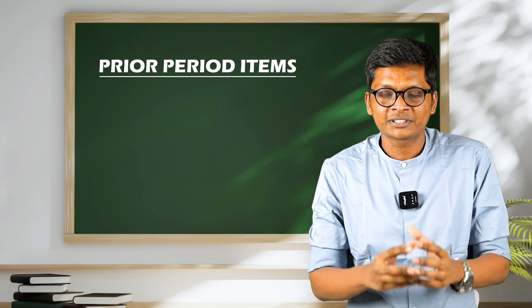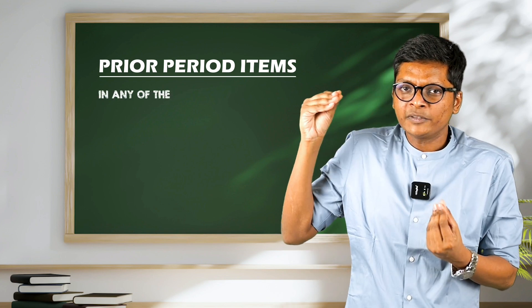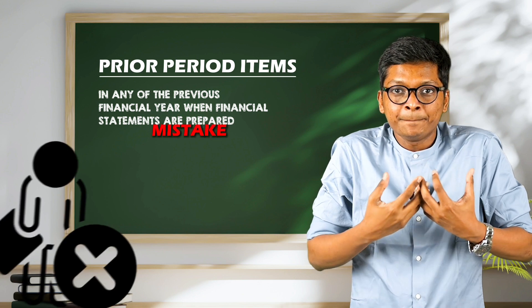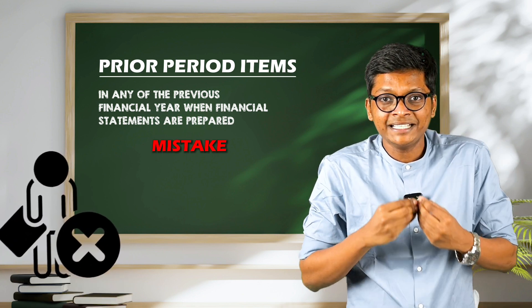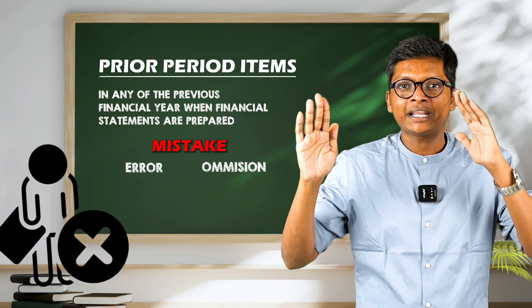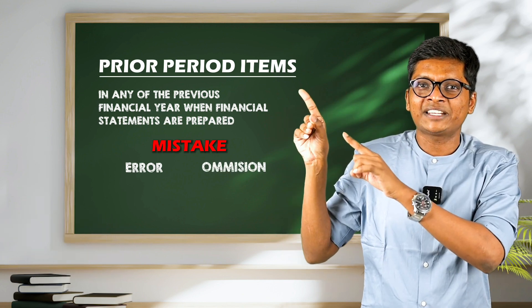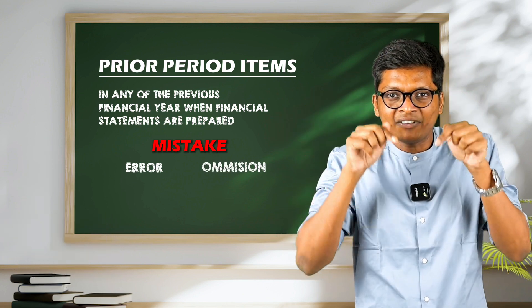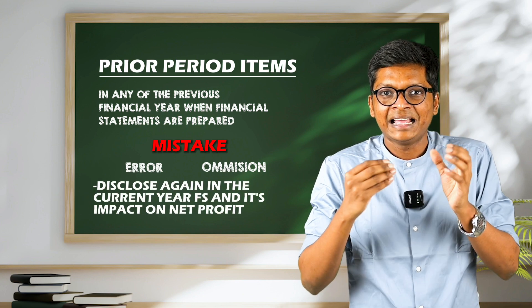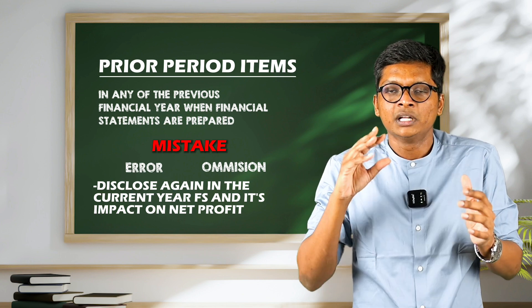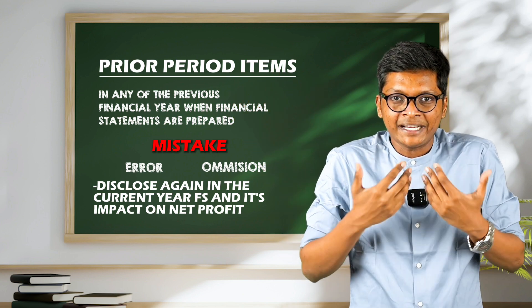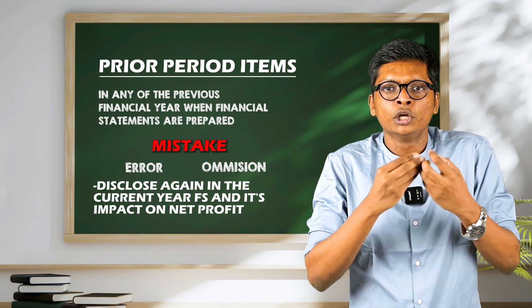Next, prior period items. These are simple. In any of the previous financial years when financial statements were prepared, if you have made any mistake — carefully remember, a mistake relating to error or omission — any error or omission in the previous financial year, you can rectify it in the current financial year, but again disclose it separately in the current financial year and its impact on net profit. There is no limit on how many years back you can go; if you identify an error or omission this year, you can rectify it.